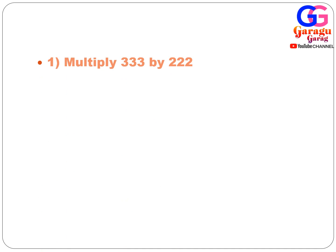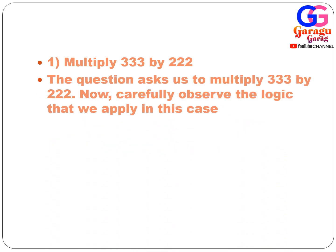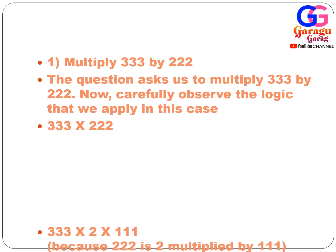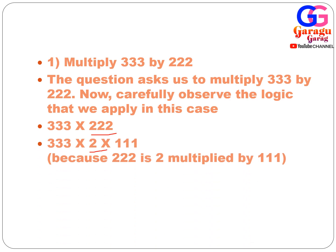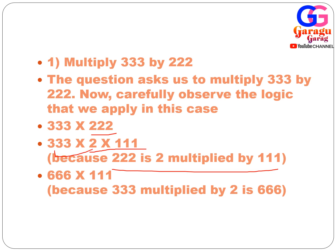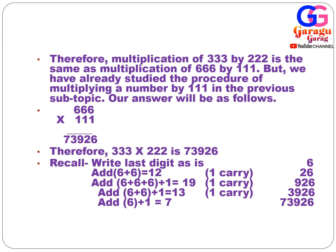Let's multiply 333 by 222. Observe the logic: 222 is converted as 2 × 111. So 333 × 222 becomes 333 × 2 × 111, which equals 666 × 111. We already discussed how to multiply with a series of ones in the last session. Applying that technique, the answer is directly 73,926.